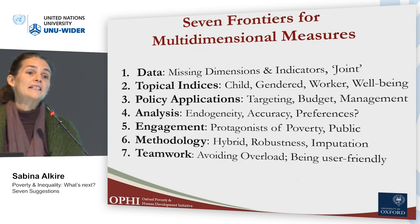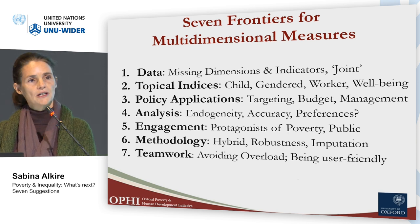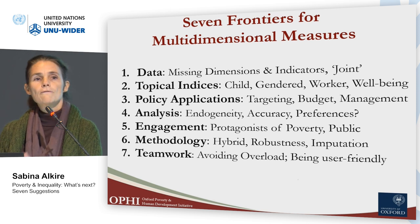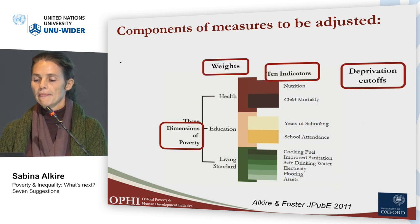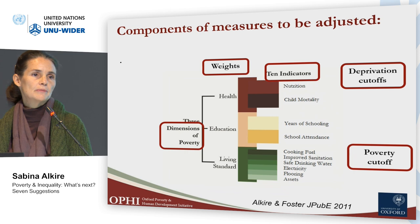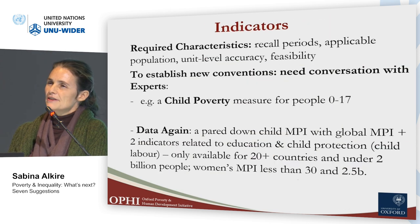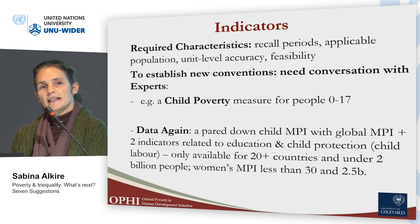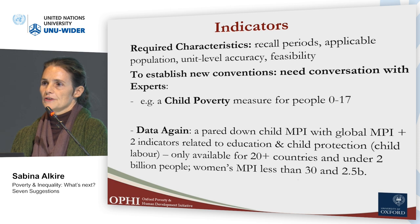Second: topical indices. There is a call now for individual child measures reflecting child well-being from age 0 to 17, and for gendered measures comparing women and men. For each of these, you need to select dimensions, indicators, weights, and cutoffs. Any index like these — including the widely used indices at national and regional levels — face big questions about the indicators in use.